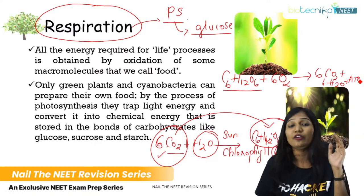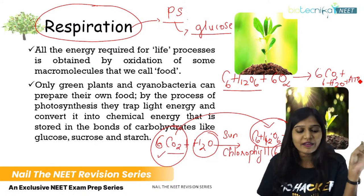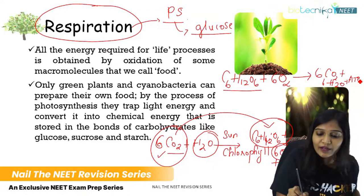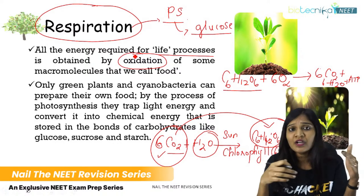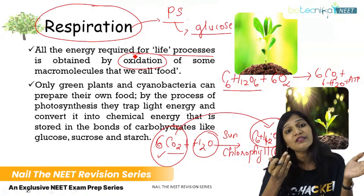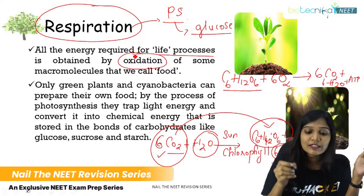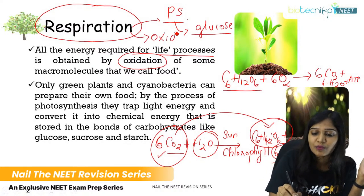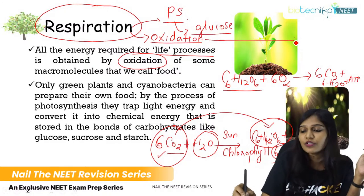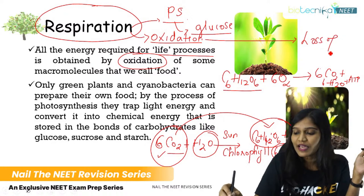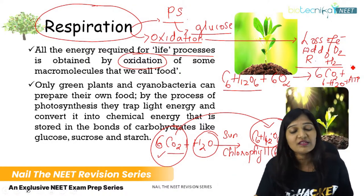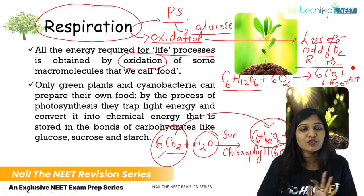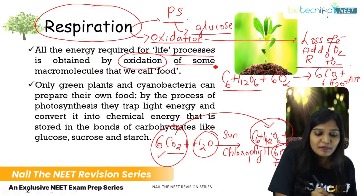All the energy required for life processes is obtained by oxidation — very important. Photosynthesis is a reduction reaction, but respiration is an oxidation reaction. Oxidation means loss of electrons, addition of oxygen, or removal of hydrogen. So remember: photosynthesis is a reduction process, whereas respiration is an oxidation process — oxidation of some macromolecule which we call food.